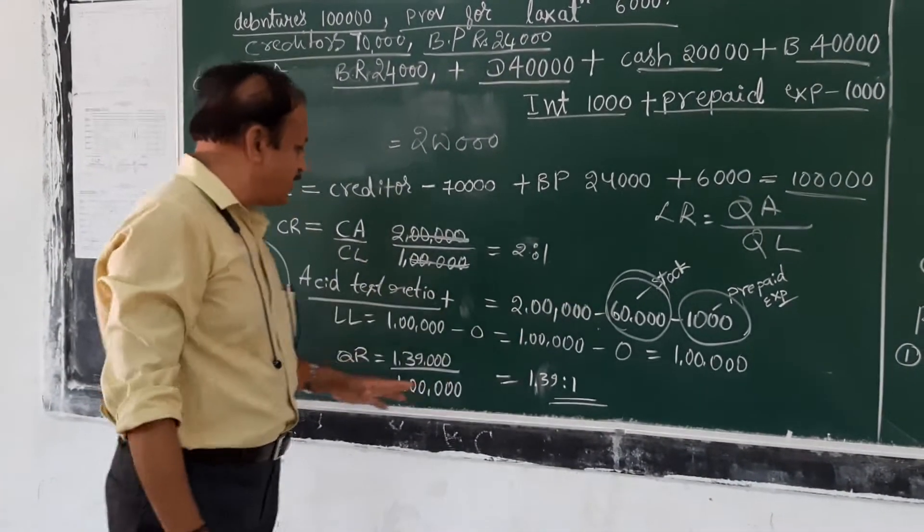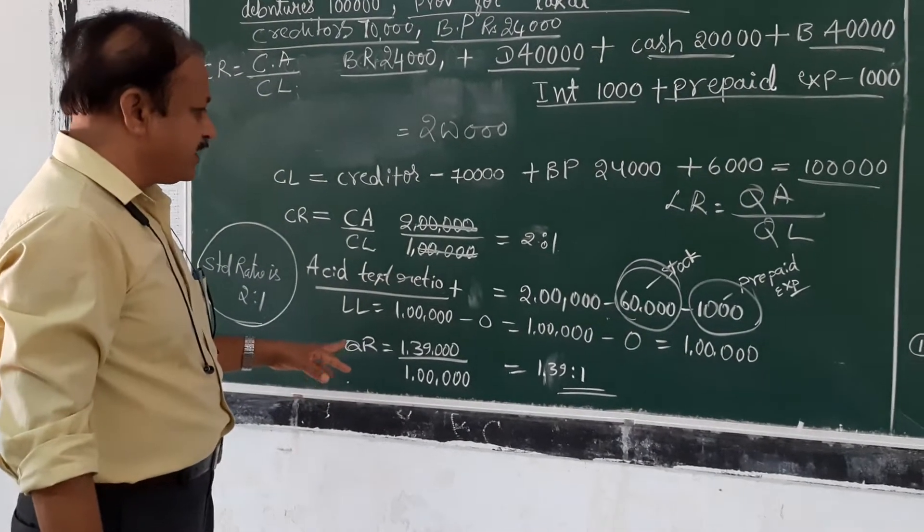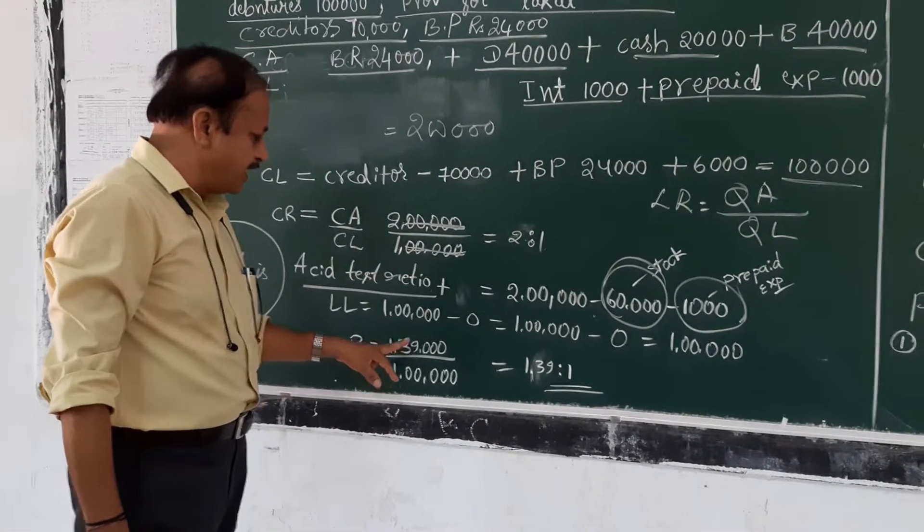When you deduct all these items from the current assets, we get 1 lakh 39,000.